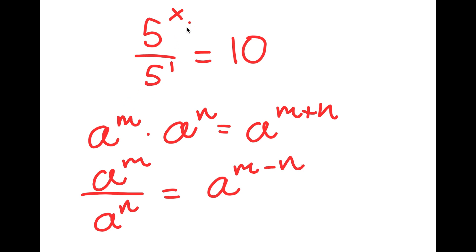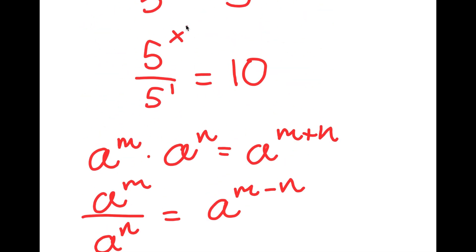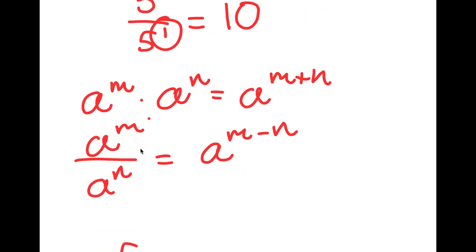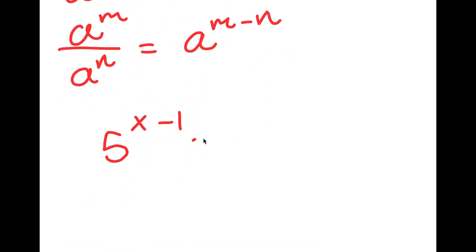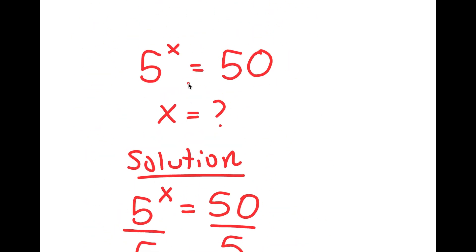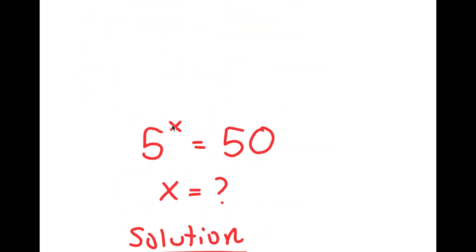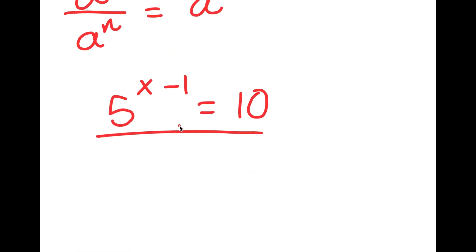So 5 to the power of x over 5 to the power of 1, that's going to equal 5 to the power of x minus 1, and I get this is equal to 10. So now, as you can see, we have a more complex exponential equation. We started off with 5 to the power of x equals 50, and now we have 5 to the power of x minus 1 is equal to 10.